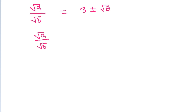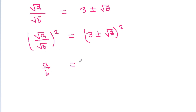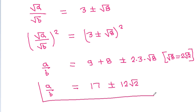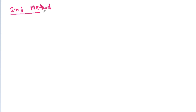Therefore root a by root b equals 3 plus or minus root 8. Squaring both sides, a by b equals (3 plus or minus root 8) squared, which is 9 plus 8 plus or minus 2 times 3 times root 8. So a by b equals 17 plus or minus 12 root 2, since root 8 is 2 root 2.